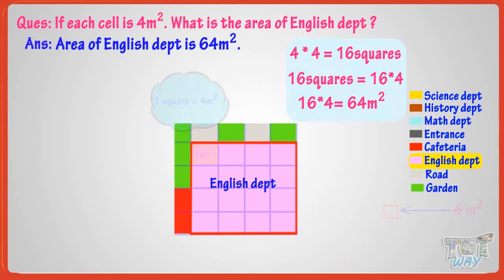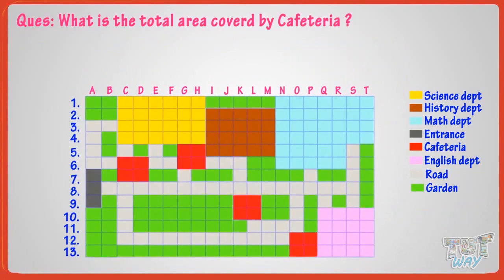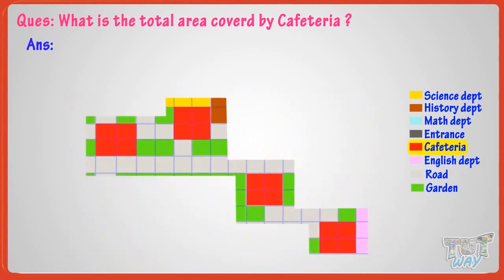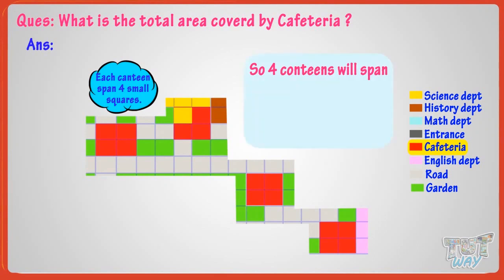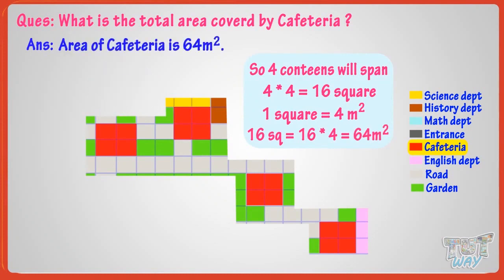Now, what is the total area covered by all the canteens, given that each cell is 4 meters square? Let's find it out. There are 4 canteen areas, and each canteen spans 4 small squares. So 4 canteens will span 4 multiplied by 4, that is 16 small squares. It is same as English department. So its area is also 16 multiplied by 4 equals 64 meters square.